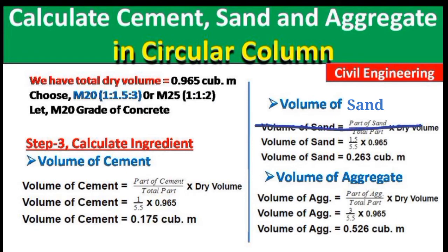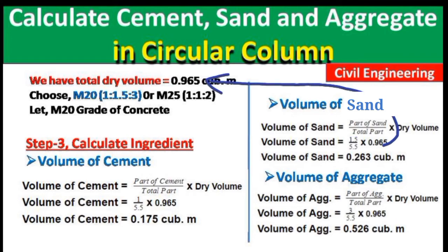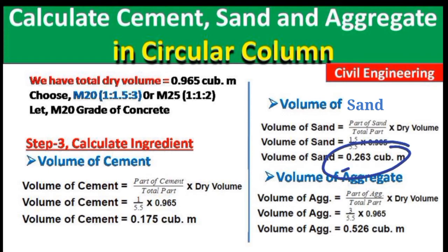Using the same formula for sand: part of sand = 1.5, total parts = 5.5, dry volume = 0.965. Volume of sand = (1.5 / 5.5) × 0.965 = 0.263 cubic meters.